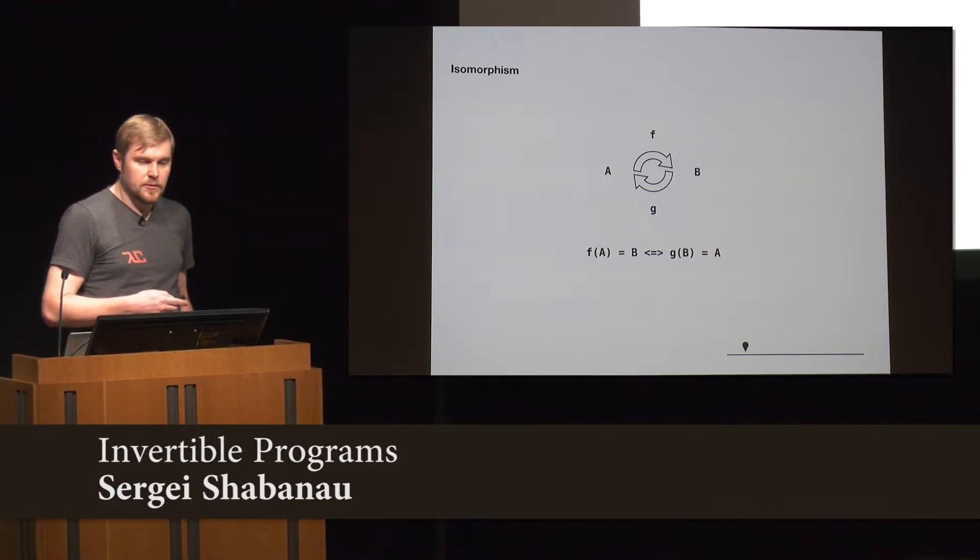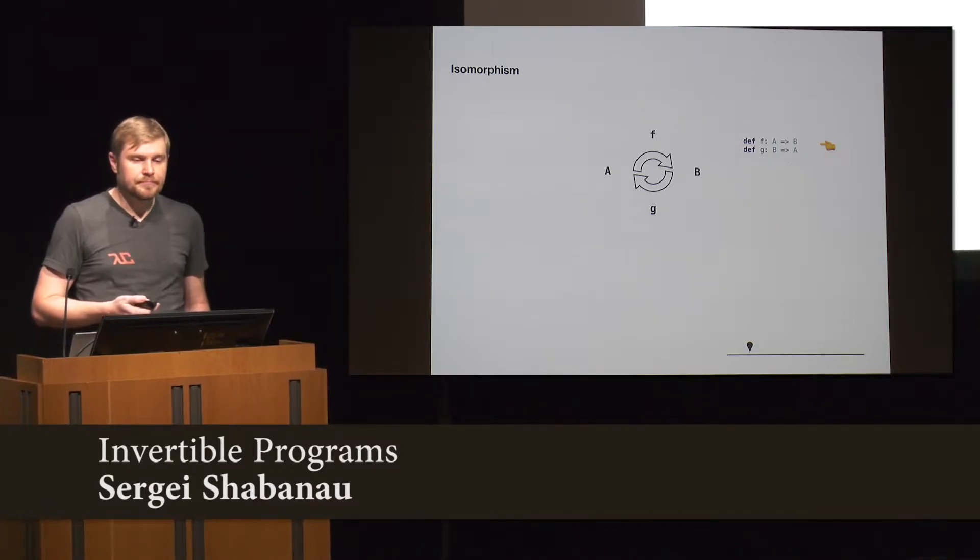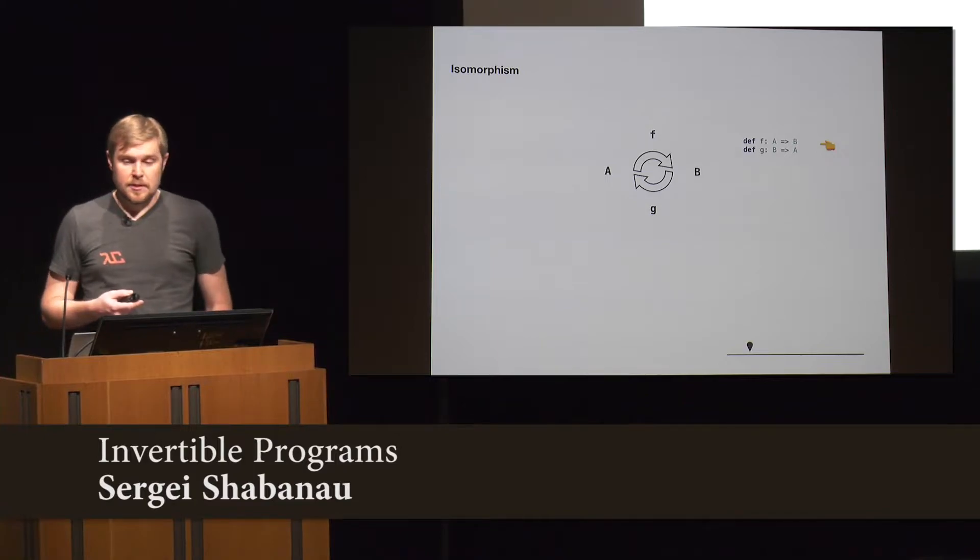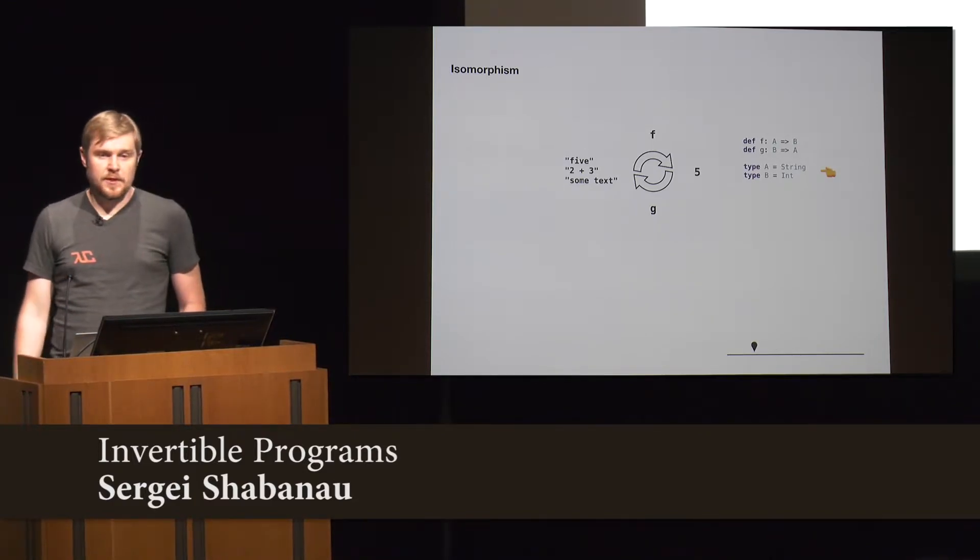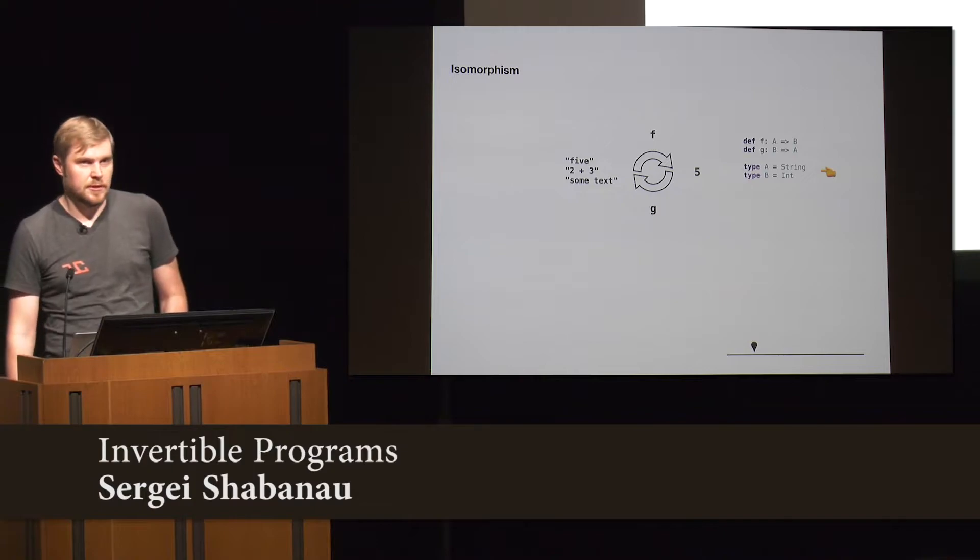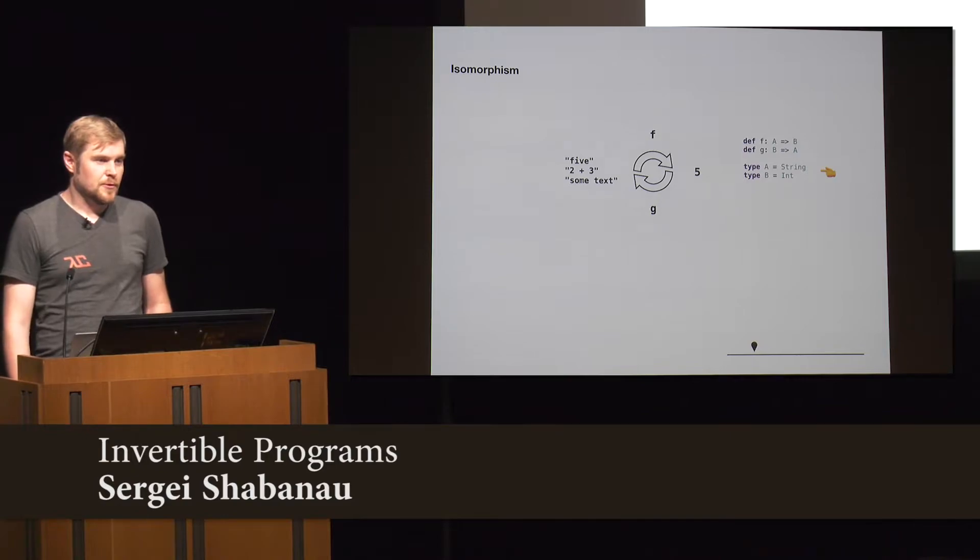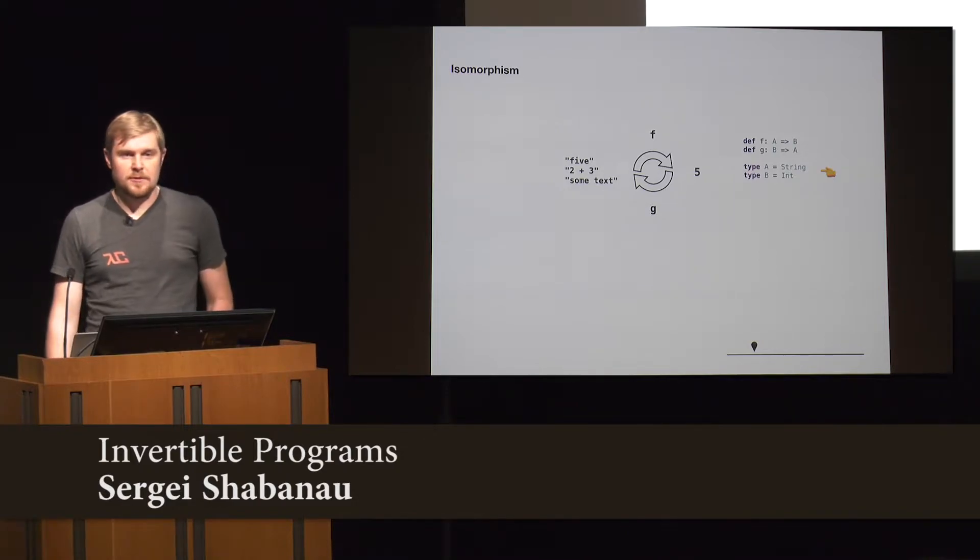Now, we are not in category theory. We are in ScalaLand and we deal with functions and types. And here you can see that if we simply define our functions as something going from A to B, and then give some real types, like this one, that GVM has functions like string to int. That isn't really possible, because if you try to convert something to five, that's okay, but for some type it's not going to work.